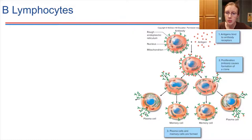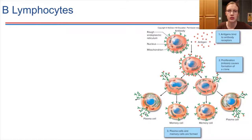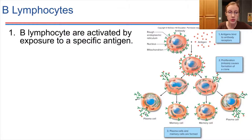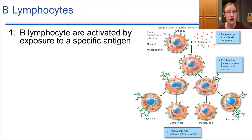Let's look at B lymphocytes and T lymphocytes in more detail, starting with the B lymphocytes. These are the cells that produce antibodies. B lymphocytes don't just constantly spew out antibodies — they have to be triggered to do so. The thing that triggers them is being exposed to some sort of pathogenic antigen. They have to see this particular antigen in order to start ramping up production.